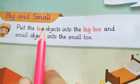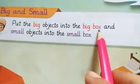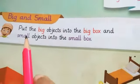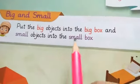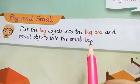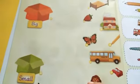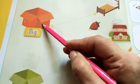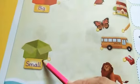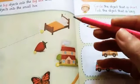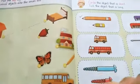Put the big objects into the big box and small objects into the small box. Two boxes are here — one is big. The orange one is big and the green one is small. And some pictures of objects.